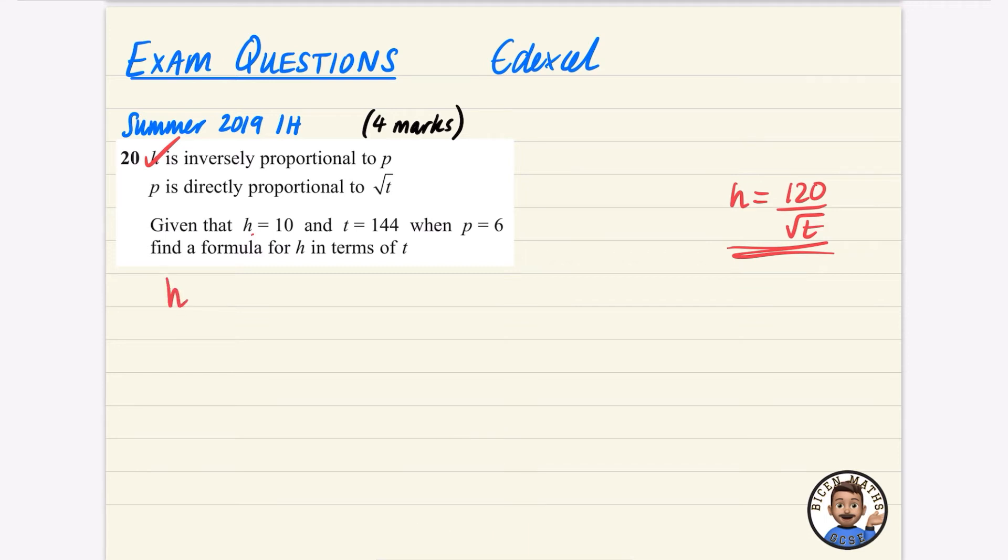This time, we've got that H is inversely proportional to P, and that P is directly proportional to T. So I could go straight in and actually say that H is actually going to be inversely proportional to root T.